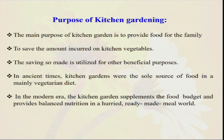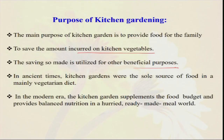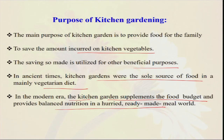The purpose of the kitchen garden is to provide food for the family — to provide quality and balanced nutrients. It saves money spent on kitchen vegetables. The saving can be utilized for other beneficial purposes. In ancient times, kitchen gardens were the only source of food — mainly a vegetarian diet. In the modern era, the kitchen garden supplements food and balanced nutrition. Besides, you also have lots of kitchen waste every day. Whatever vegetable waste you are using — like cauliflower leftovers — you can make a small compost. That compost can be used again for your vegetable garden in our organic kitchen garden, making you less dependent on purchasing organic manure or vermicompost.